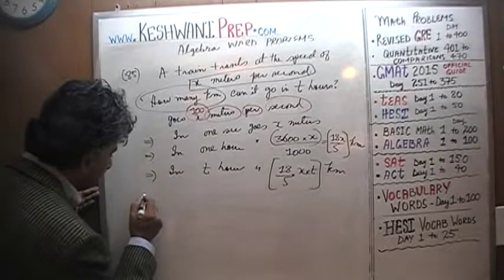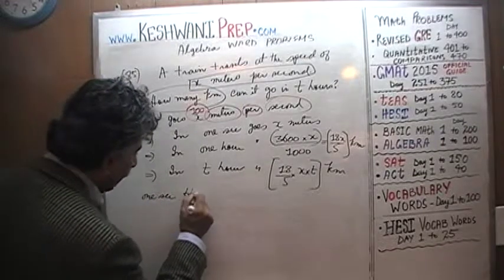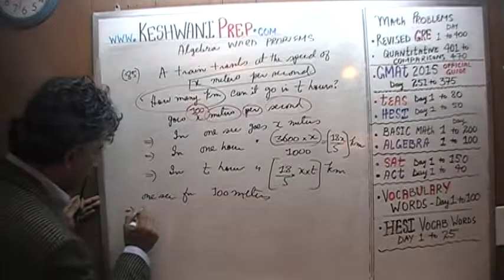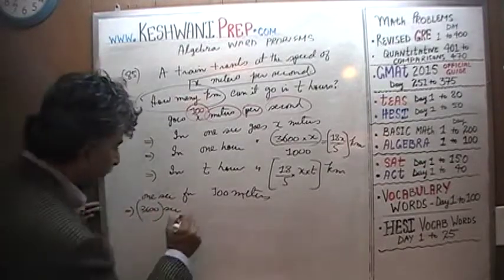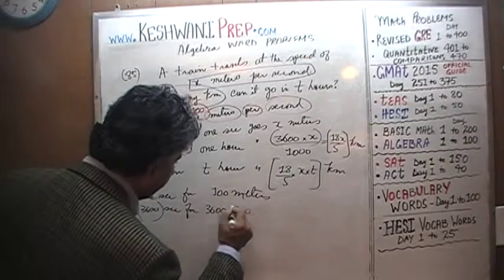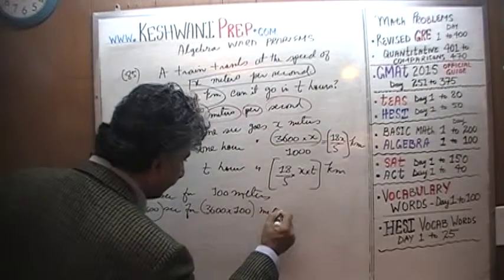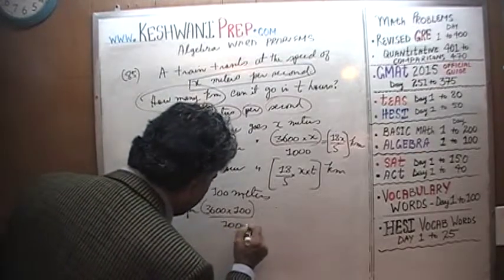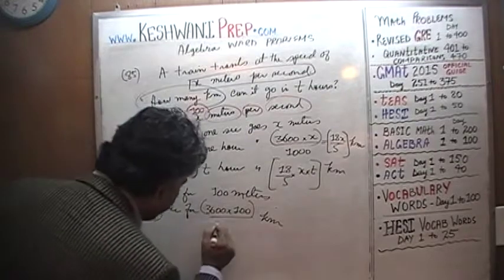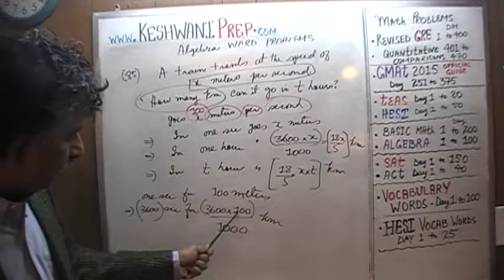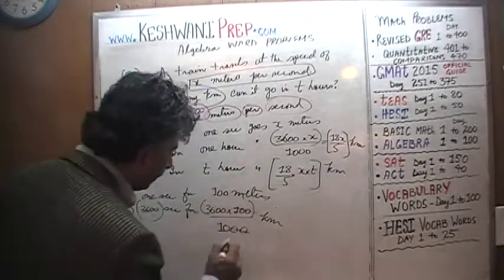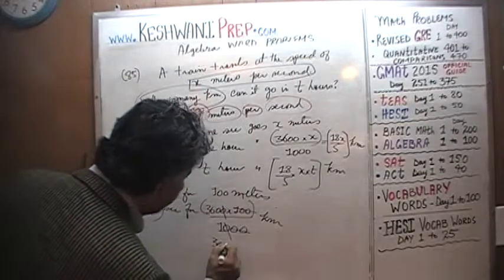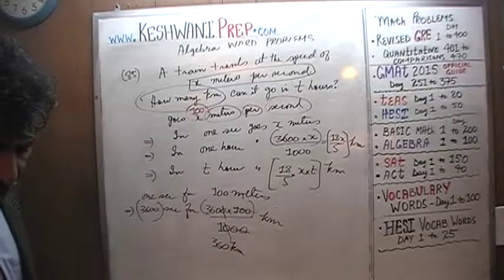100 meters in one second implies that in 3600 seconds we should go 3600 times 100 meters. We are not interested in meters — we want kilometers — so let's divide by 1000. Dividing top and bottom by 100 and then by 10, we end up with 360 kilometers. That is for one hour.